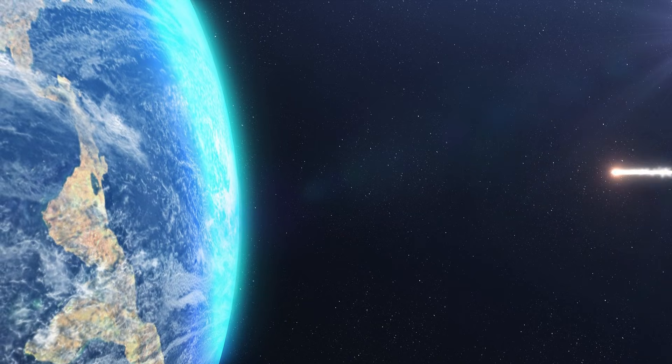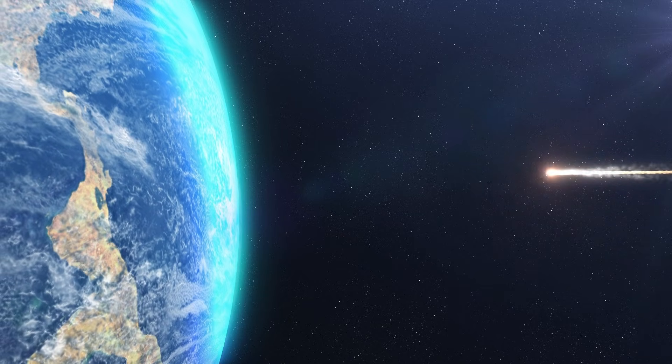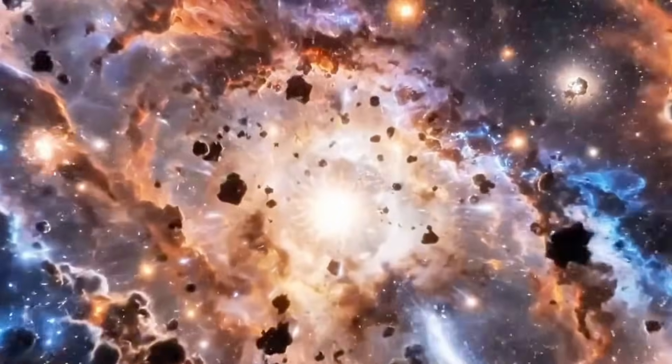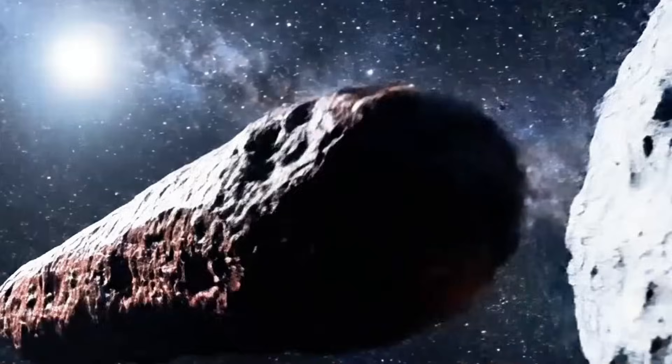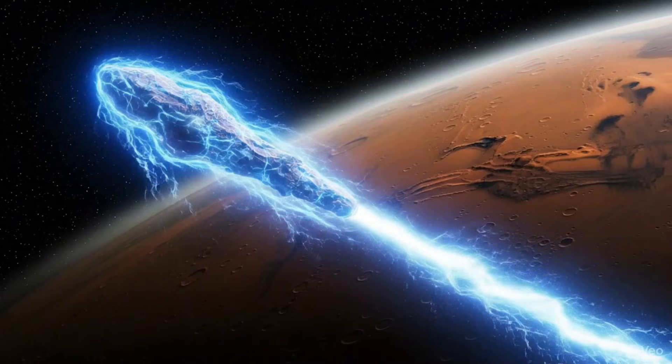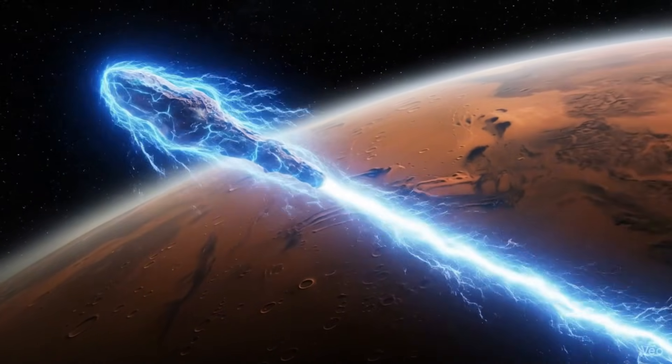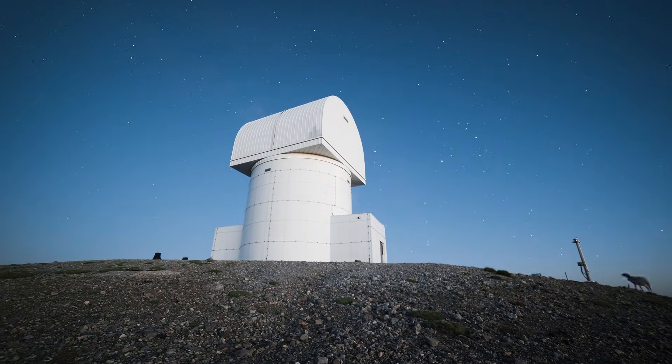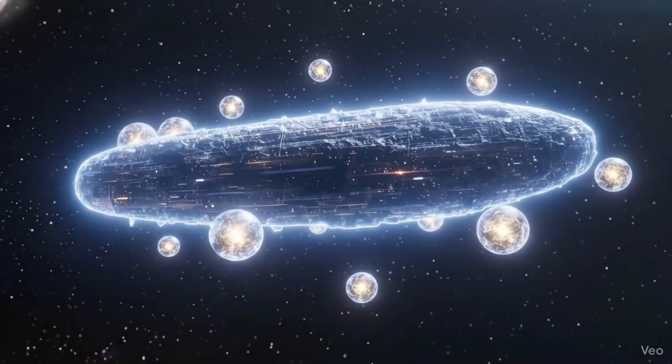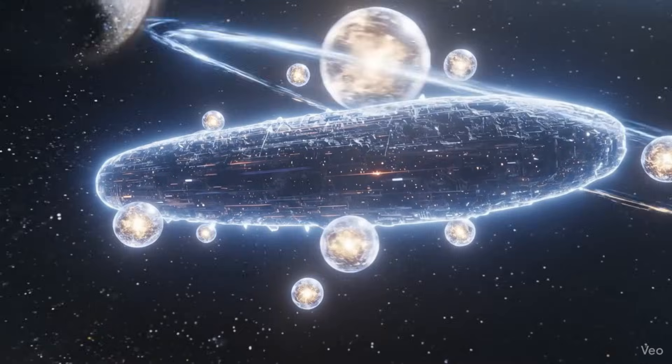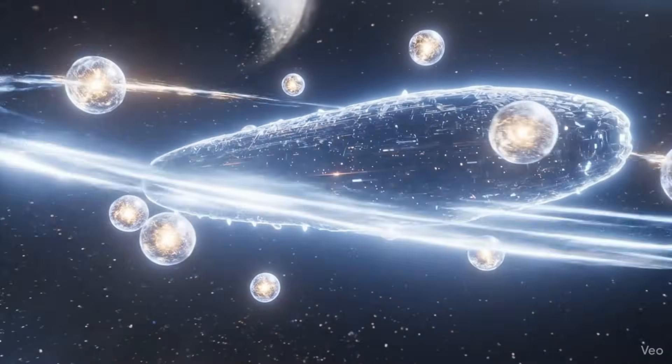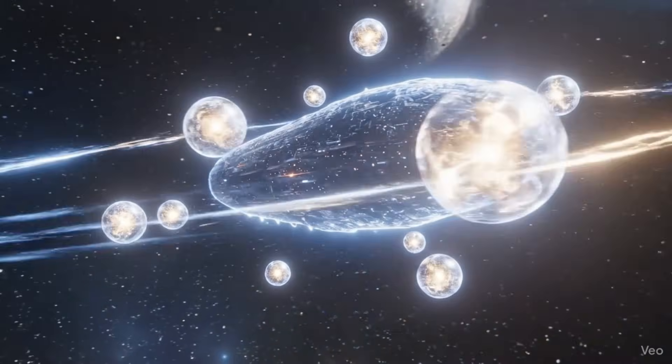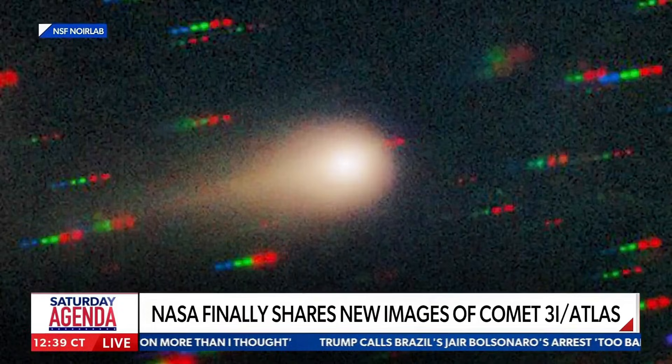Then September approached 2.5 AU. Water line crossing. Activation threshold. Color transformed. Red to green. Spectacular change. Carbon emissions dominant. Cyanogen detected. Abnormally high cyanide levels. And nickel. Lots of nickel. Without corresponding iron. Chemical anomaly. Defying explanation. Never seen in solar system comets. Never predicted by models. Never explained by natural processes we understand.